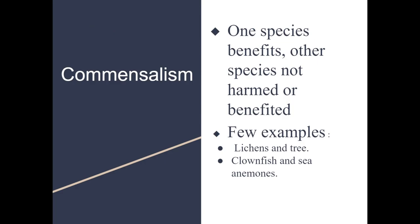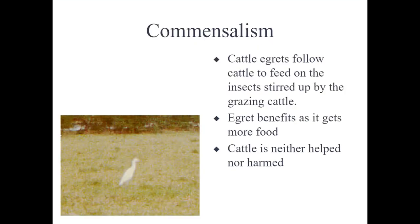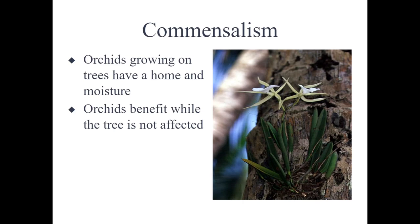Commensalism is a relationship between two or more species where one species benefits but the other is not harmed at all. For example, lichens grow on tree branches without affecting the tree. Clownfish live in sea anemones, getting free shelter without hurting the anemone. Egret birds follow cattle, taking bugs uncovered by the cattle's grazing — the cattle are not affected while the egret benefits. Orchids grow on trees for moisture and safety while the tree is unaffected — they simply coexist.